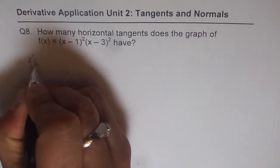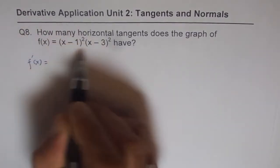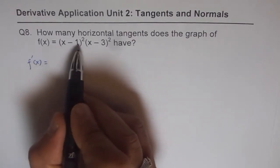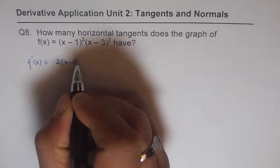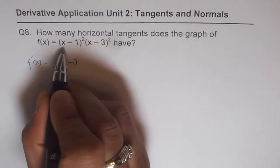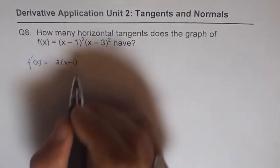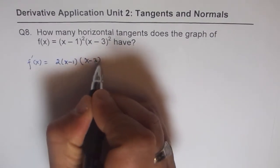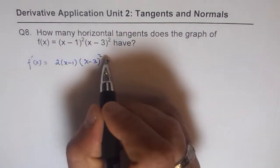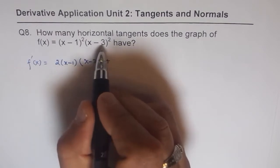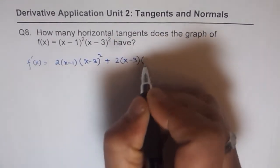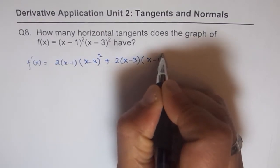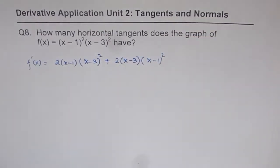So, f'(x) for the function equals, we'll apply product rule. So, derivative of the first function, which is 2(x-1)¹ times (x-3)² plus derivative of the second function, which is 2(x-3) times (x-1)². So, that is what you get.